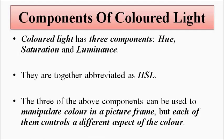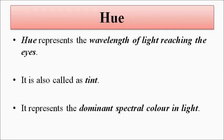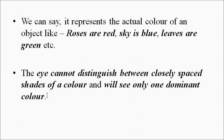Hue is basically the dominant spectral color — the dominant wavelength of light reaching the eyes — which is also called tint. It is the actual color of the object which we see: roses are red, leaves are green, sky is blue. It does not take into consideration the shade of the color — whether it is on the light side or the deep side. It simply takes into consideration the dominant color.